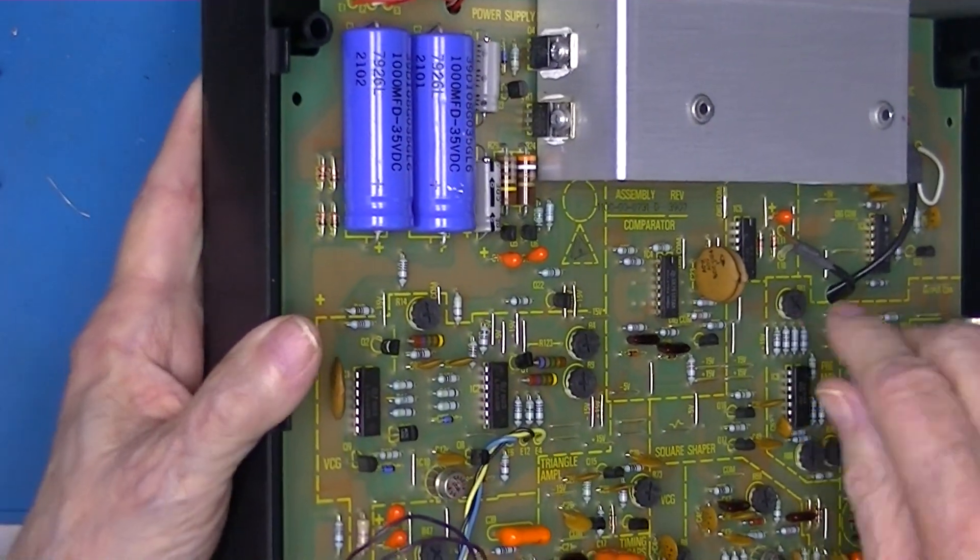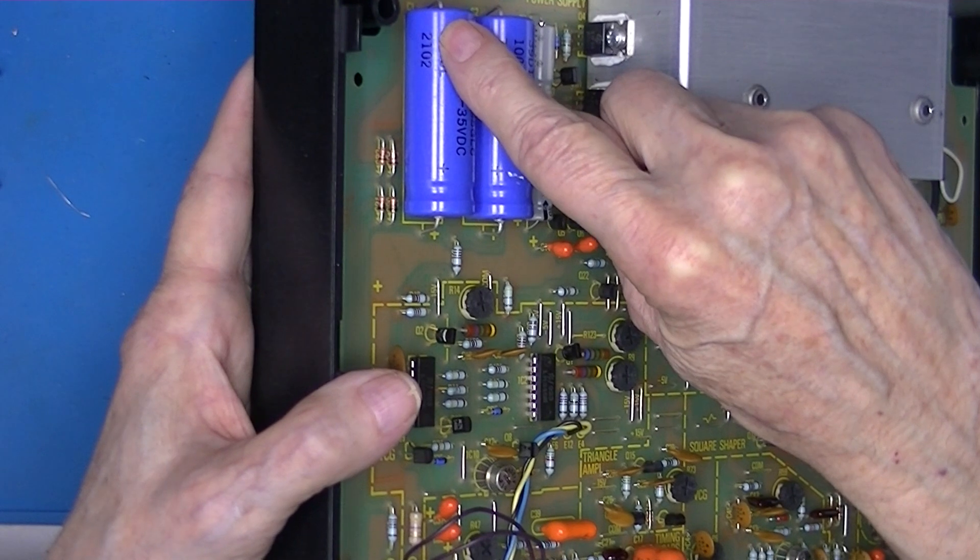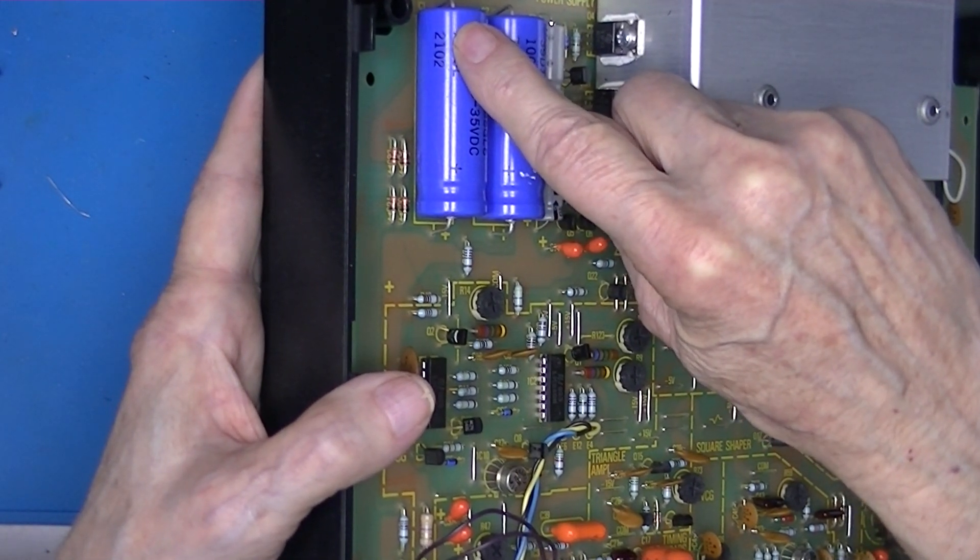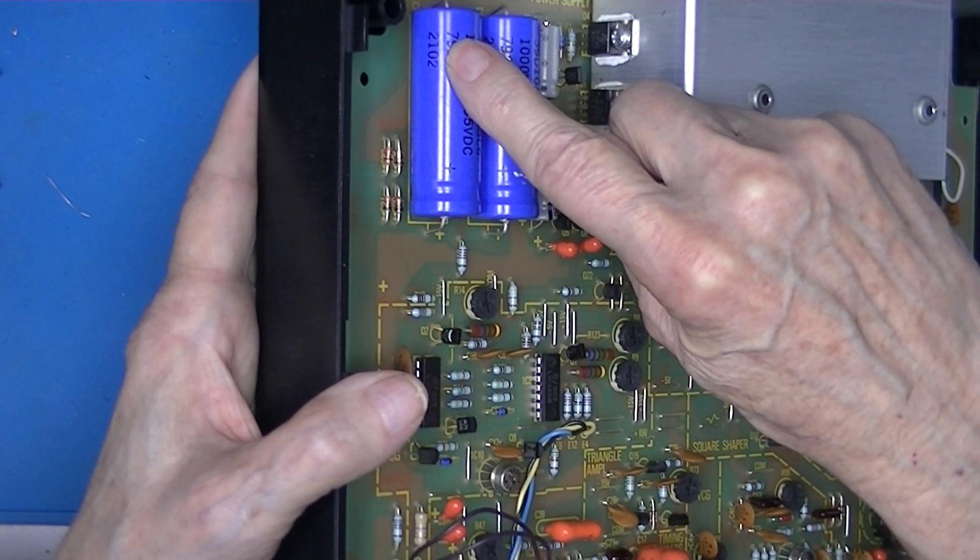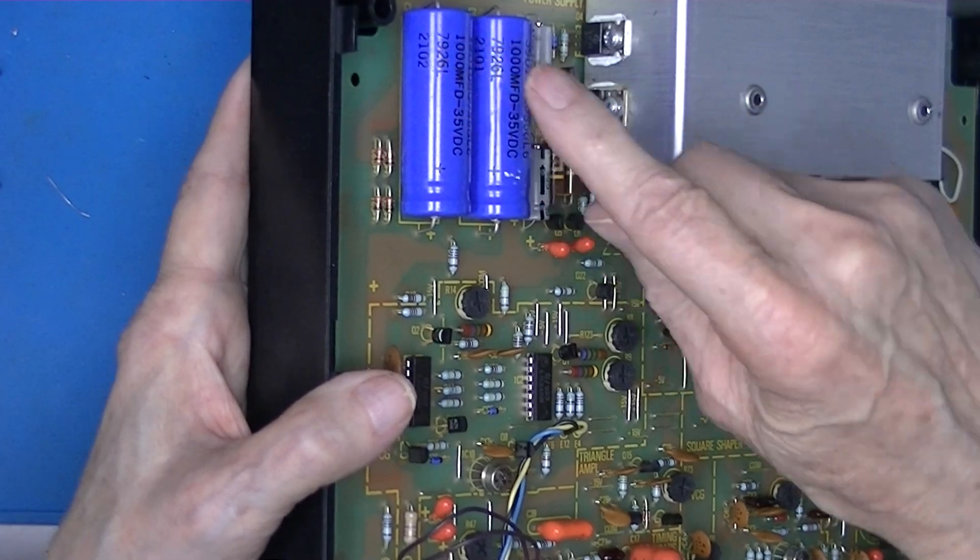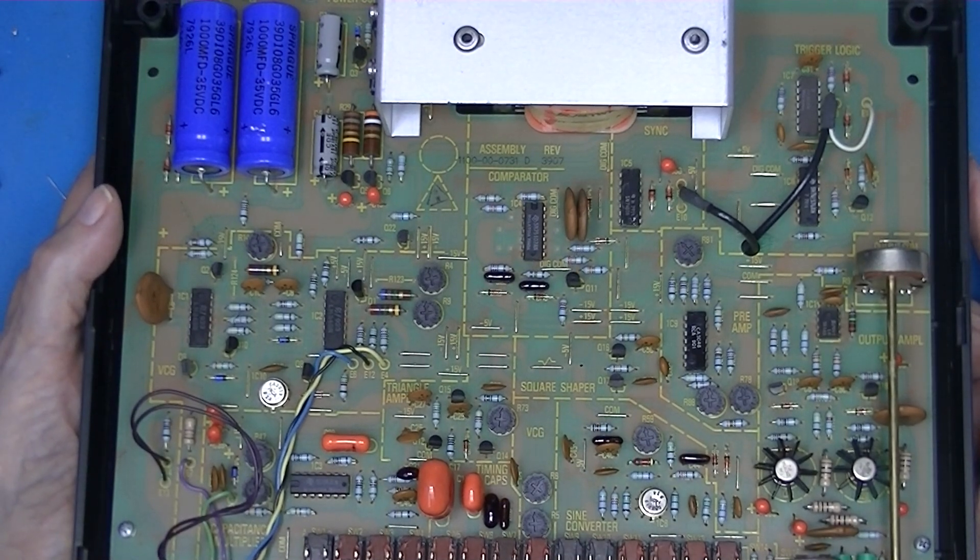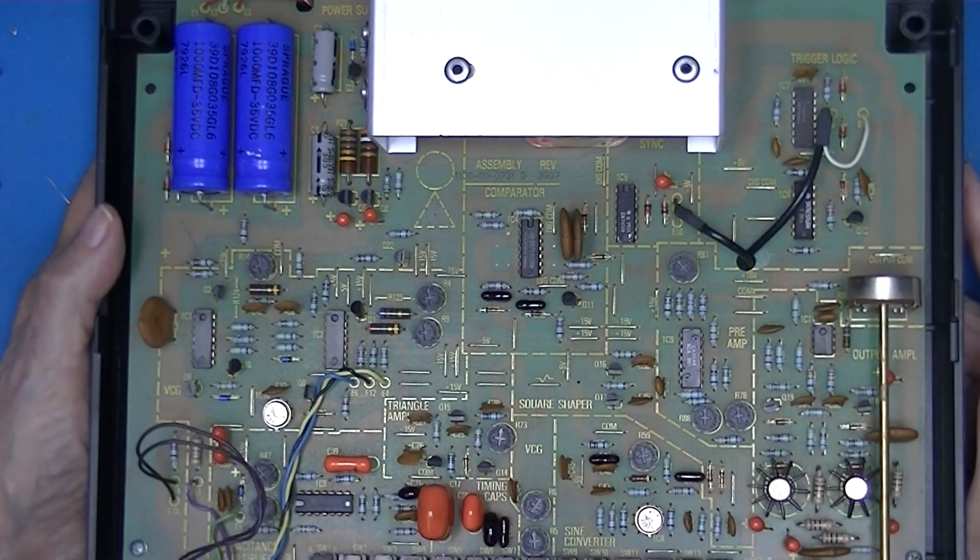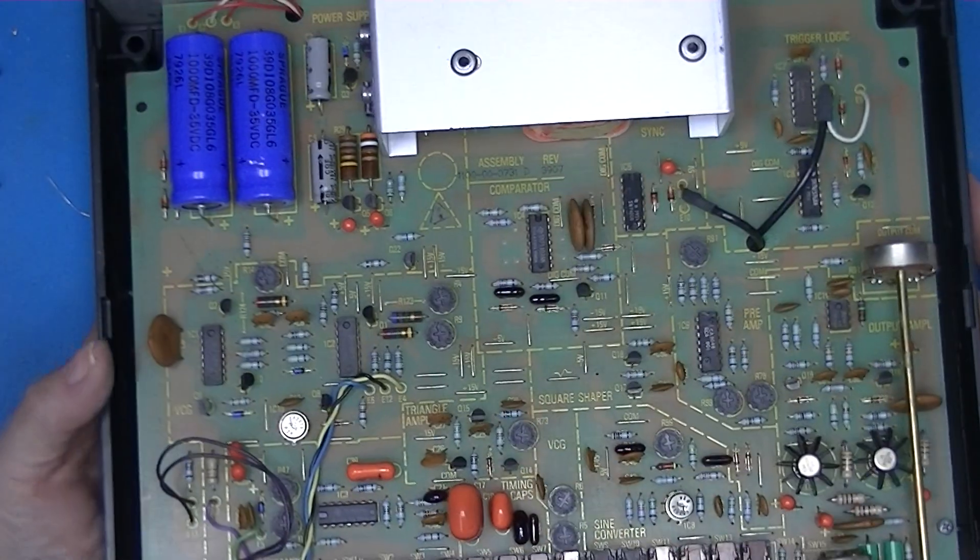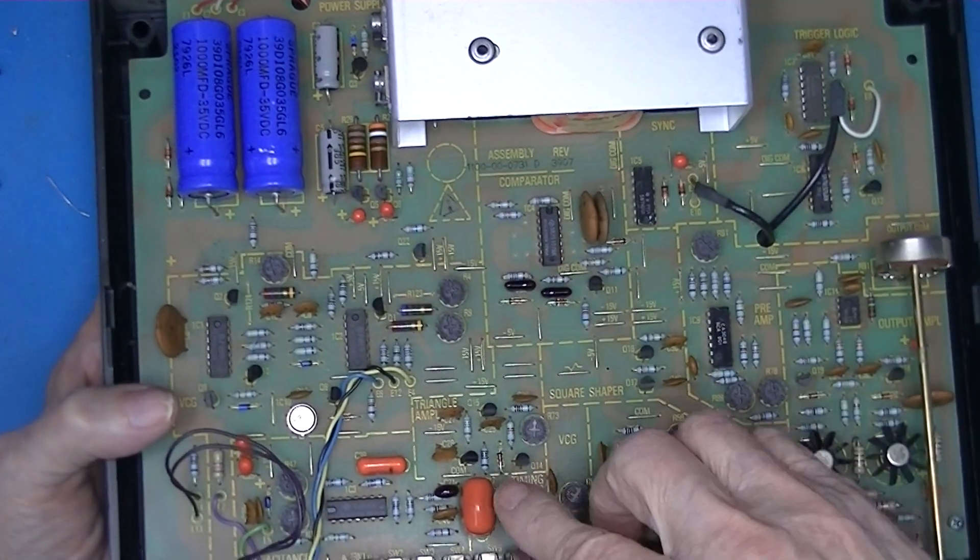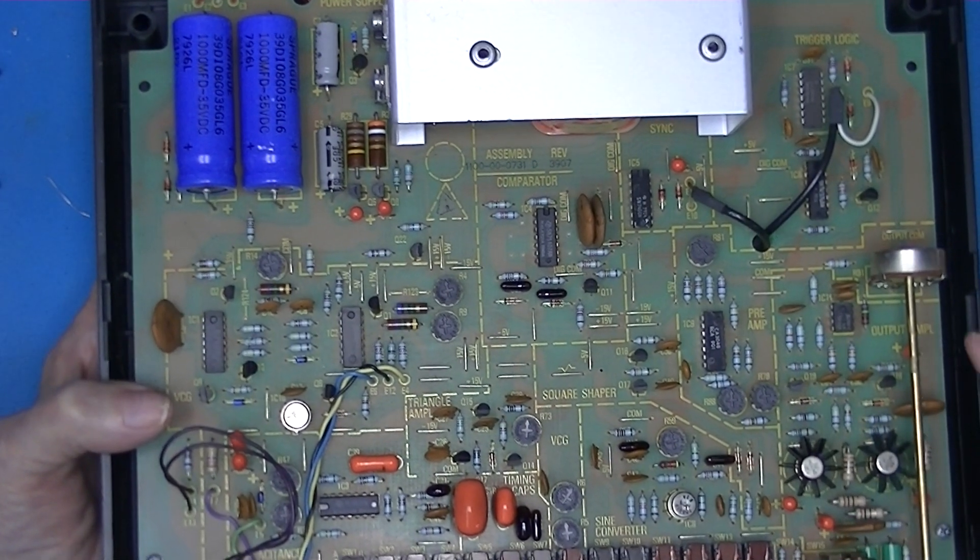These filter capacitors are Sprague, and the date code is 2102. I'm assuming 2102 means the 21st week of 2002, which would make this thing 21 years old. It's really nice inside. There's not a lot of electrolytic capacitors other than the power supply - looks like they're all Sprague orange drops and some ceramic discs.